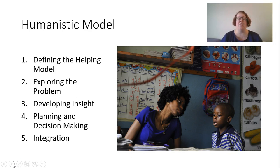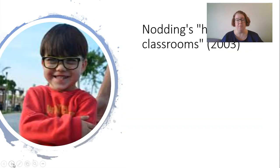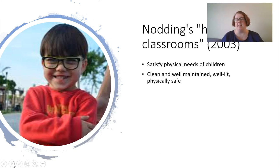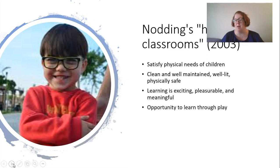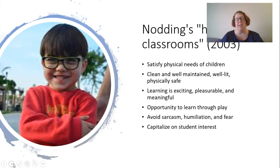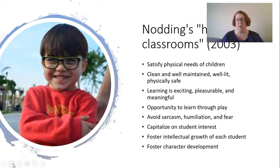All of this is predicated on the student trusting the teacher and knowing the teacher has their best interests at heart. Noddings' happy classroom idea holds that a classroom satisfies the physical needs of the child — it's clean, well-maintained, well-lit, and physically safe. Learning is exciting, pleasurable, and meaningful to students. There's opportunity to learn through play, which should go all the way up through adulthood. We avoid sarcasm, humiliation, and fear, capitalize on student interest, and foster both intellectual and character development, as well as interpersonal growth.